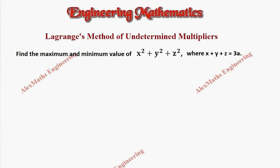Hi students, this is Alex. In this video we are going to use Lagrange's method of undetermined multipliers to find the maximum and minimum value of the function x² + y² + z², subject to the condition x + y + z = 3a.